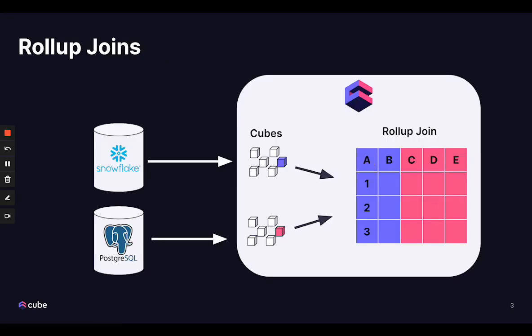A rollup join is simply to perform a join between two rollups that are already inside of Cubestore. It's not materialized and it executes the join at runtime.